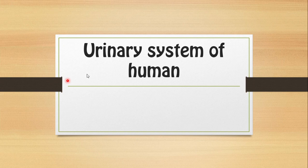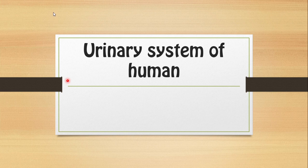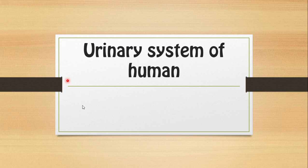Assalamu alaikum guys and welcome to my YouTube channel Biology Articles and MCQs. Today we are going to start the urinary system of humans. As the name shows, a urinary system is a system that is used to excrete urine from the body — the main system that helps in the excretion of metabolic waste from your body, or helps to eliminate toxins out from your body. It is called the urinary system or excretory system.